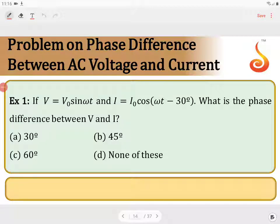So if V equal to V0 sin omega t, the AC voltage applied and the current is I equal to I0 cos omega t minus 30. What is the phase difference between V and I?